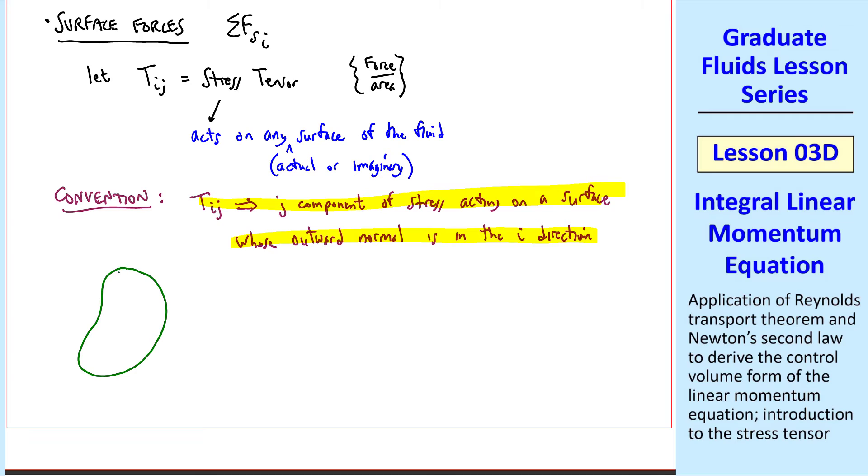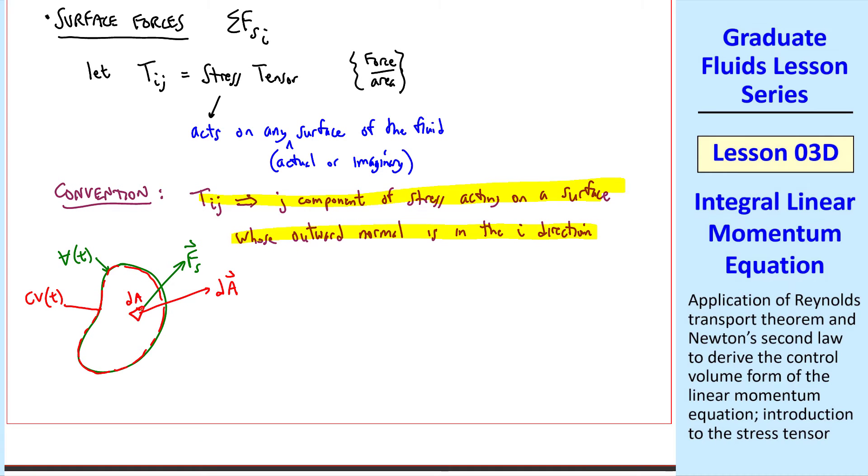Let's take our volume at some time t, which as we've said, is also our control volume at time t. And we look at some small area element dA. The outward normal is dA vector, and the surface force fs acts in some direction. Instead of a square, let's consider an element that's triangular in shape. What we'll do is magnify this, and we'll split it into three faces that are aligned with the coordinate axes, x1, x2, x3.